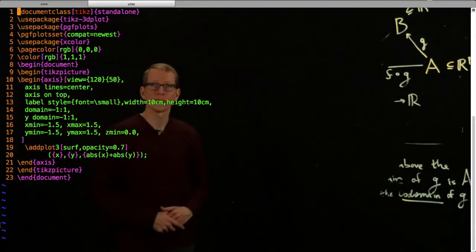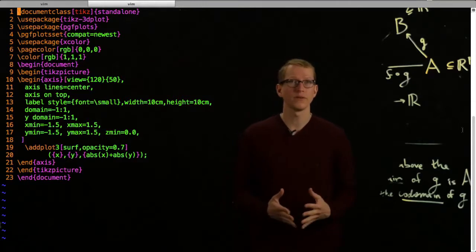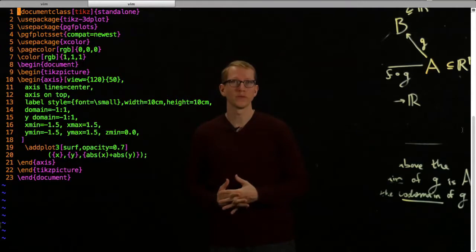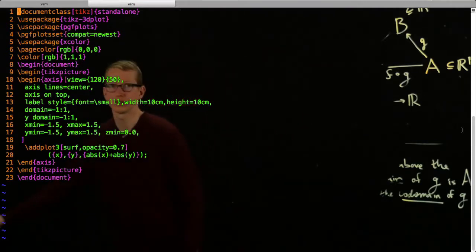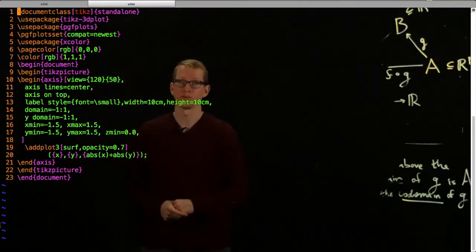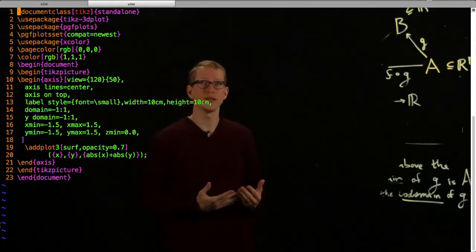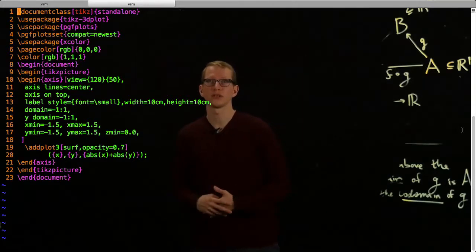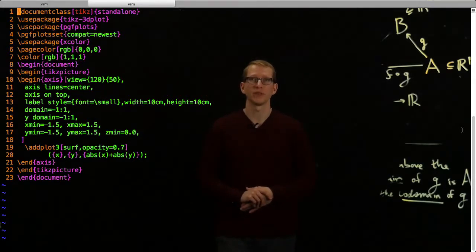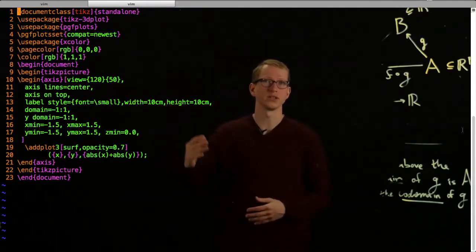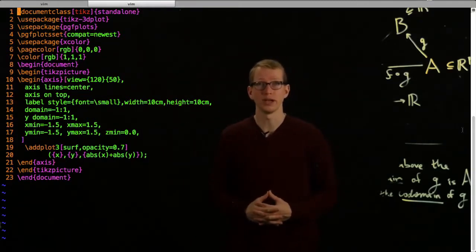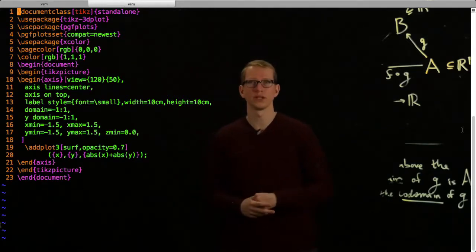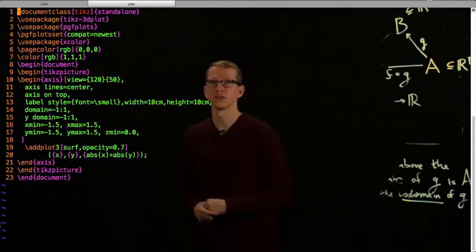This second example is going to be a graph of a function from the plane to just the real line. This is probably a little bit more familiar from calculus, where you try to plot functions of several variables. In this case, two variables. We start off in a very similar fashion. We start to document class TikZ standalone, so that we know that we just have that plot of the image. And here we're going to have to load a couple of packages. We're going to be using 3D plot. And that's because we're going to be plotting not just graphs, such as the one I just erased, but also a little bit more complicated graphs. Surfaces. This will be useful for surfaces.